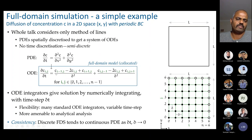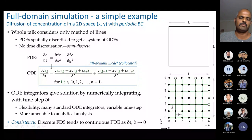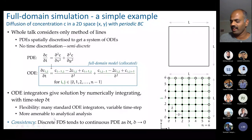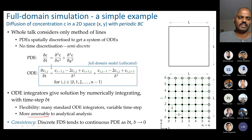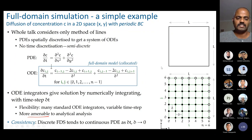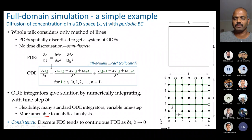We use the finite difference approximation of spatial derivatives, which gives ODEs — this process is the method of lines, where we do not discretize time. This gives flexibility in analytically analyzing solutions and allows use of many standard ODE integrators. Throughout this talk we will use only the method of lines. The full domain simulation evaluates time derivatives and integrates numerically for a time step delta t. We call this full domain simulation consistent when the discrete equation approximates the continuous equation better as the time step and spatial grid size decrease.